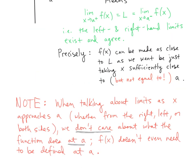To re-emphasize: in all these limit definitions — whether from the right, left, or both sides — we do not care at all about what the function does at the point a, the limiting point that x is approaching. Our function f doesn't even need to be defined at that point a. The value of the function at a is totally irrelevant in these definitions.